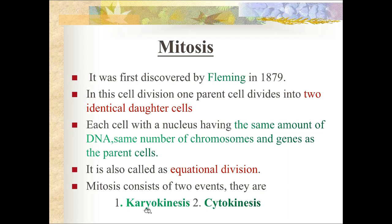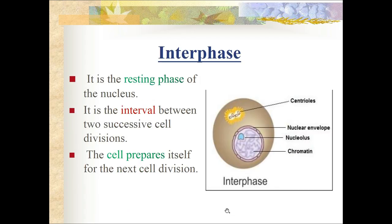The first stage of mitosis is called interphase - the resting phase of the nucleus. It occurs between two consecutive cell divisions and is the interval between two successive cell divisions during which the cell prepares itself for the next division.